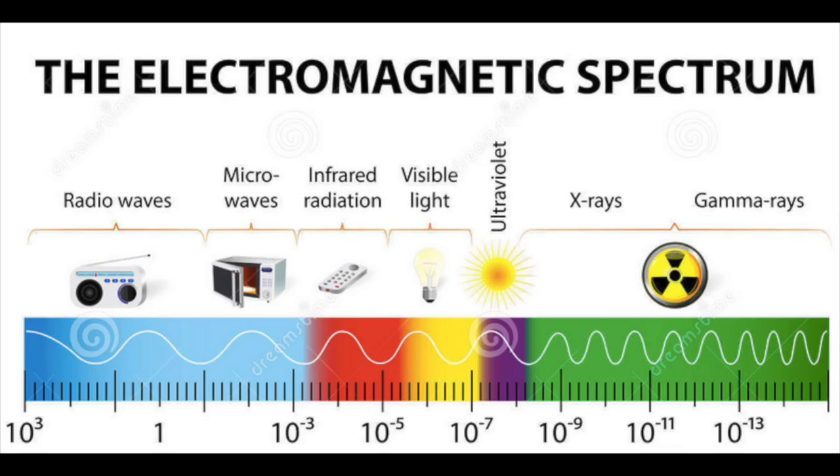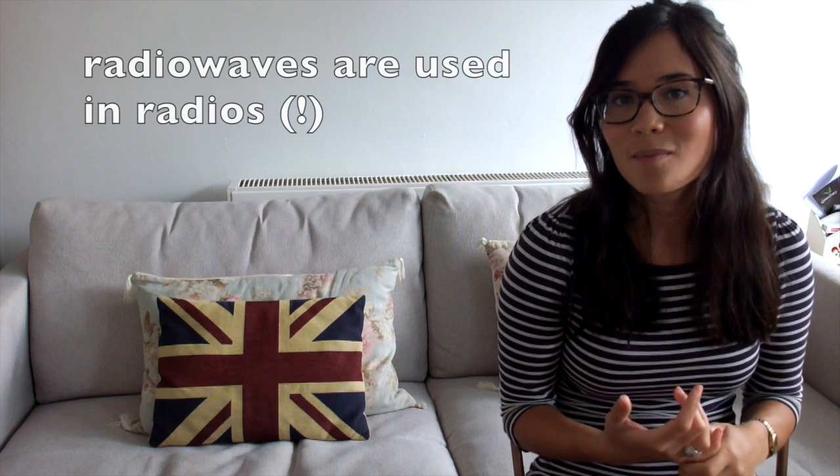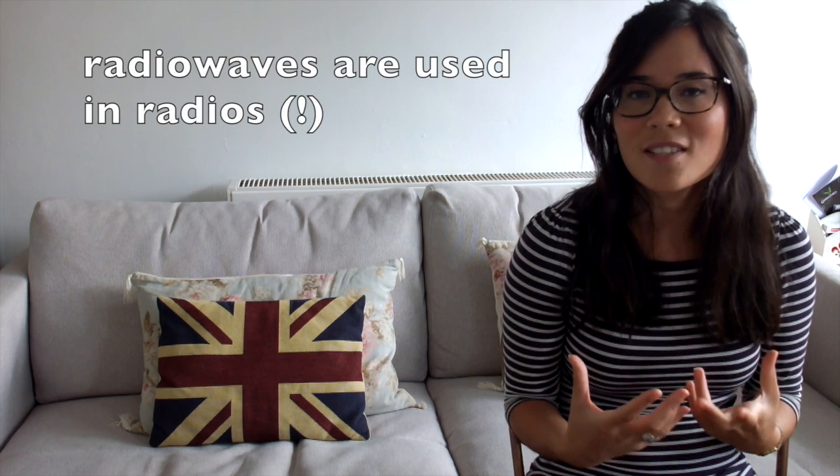And finally, we're going to talk about radio waves. Obviously radio waves are used in communication, because that's how we listen to the radio. These are our longest wavelength waves, and they have the lowest frequency out of all the waves in the EM spectrum.